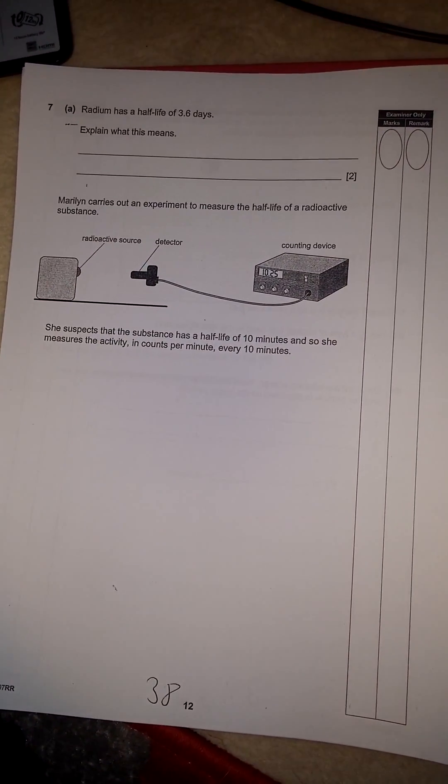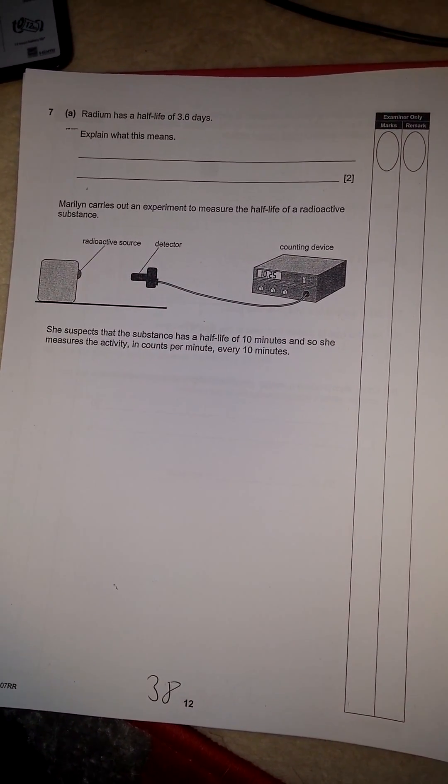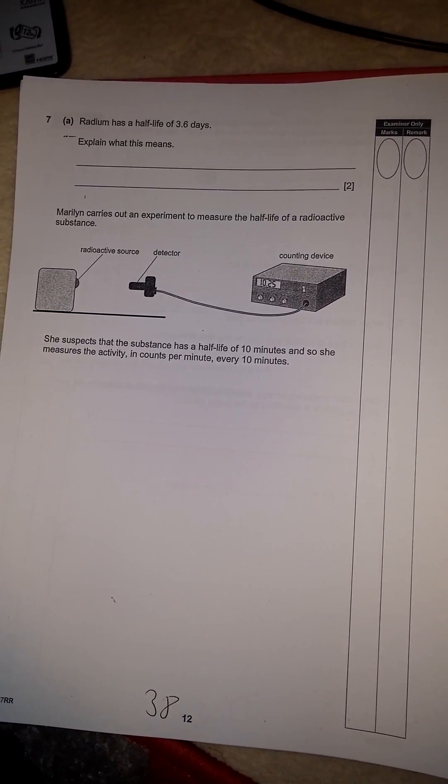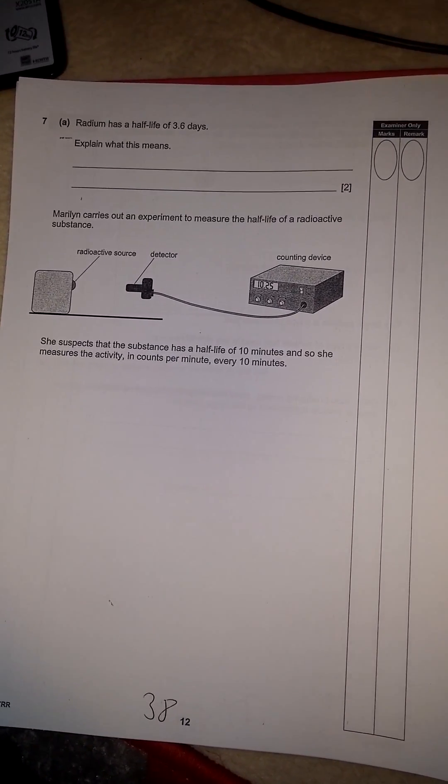Okay, so this is the same May 2012 higher physics paper. This is another one, half-life. So it says, radium has a half-life of 3.6 days. Explain what this means.